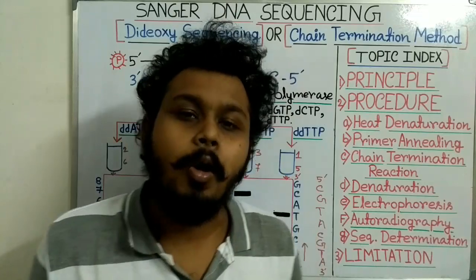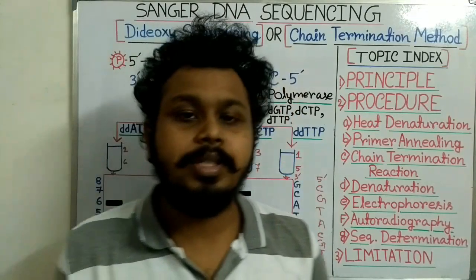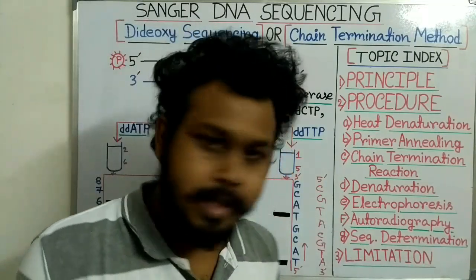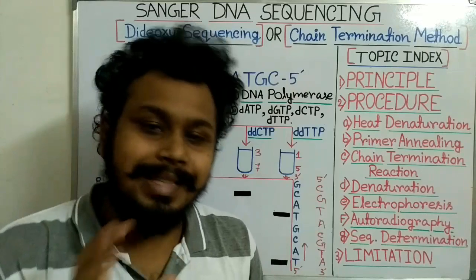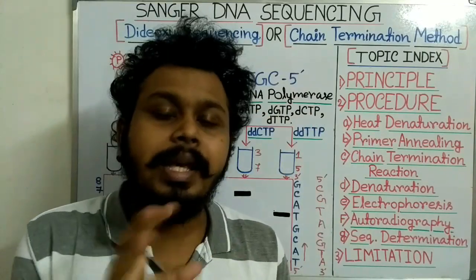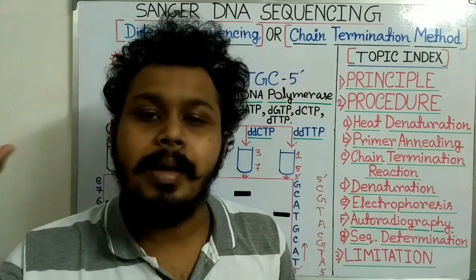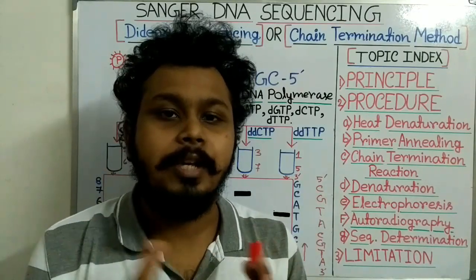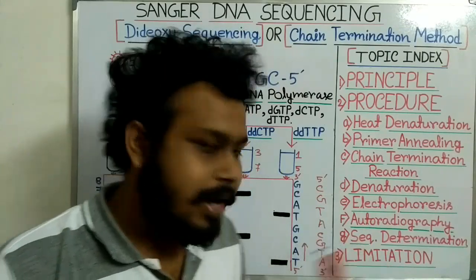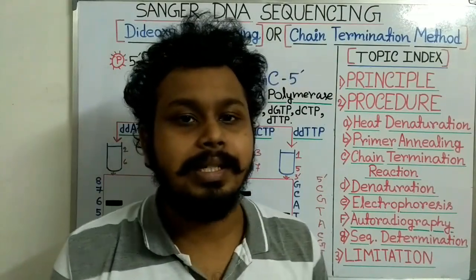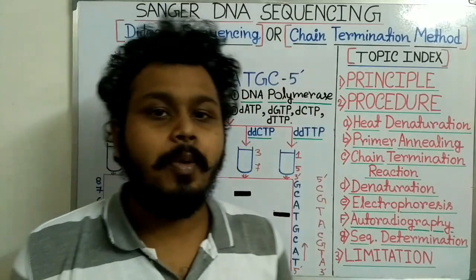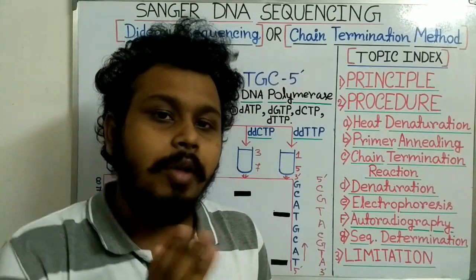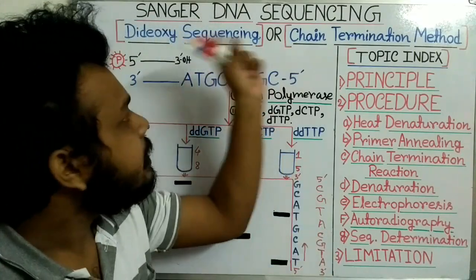Although Sanger DNA sequencing is very popular, it has some limitations. First, it can only sequence up to 900 base pairs at a time, which is very small compared to the whole human genome. Second, the process is time-consuming and laborious.